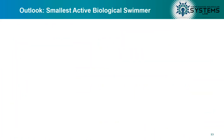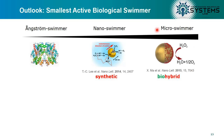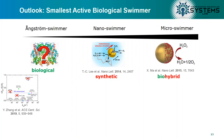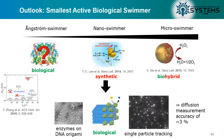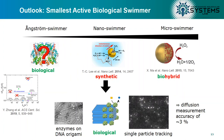Now I would like to present an outlook on what we are working on right now. The question we are focusing on is: what is the smallest active biological swimmer? There are many micro-swimmers based on enzymes — biological or bio-hybrid swimmers using inorganic particles and enzymes — in the nanometer scale, while only synthetic swimmers have been reported so far. On the angstrom scale, it is now unclear if enzymes can swim at all by themselves. So we focused on the nanoscale and built a completely biological swimmer containing DNA origami and enzymes. We were able to track these particles with single-particle tracking and extract the diffusion coefficient. This work is still ongoing, and I hope to present it at Fnano 2021.